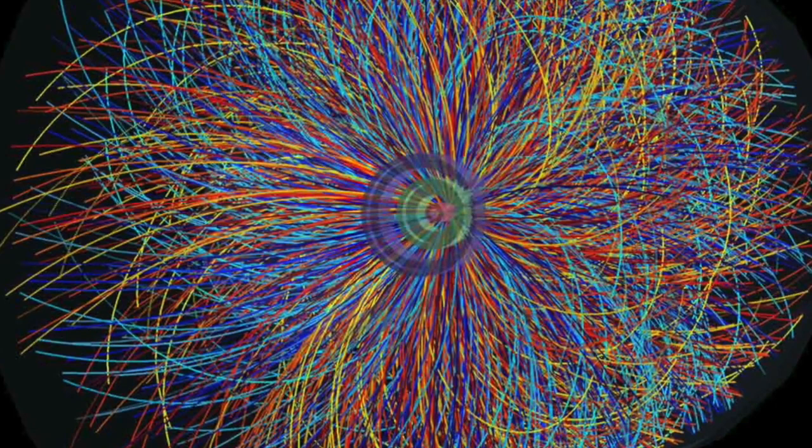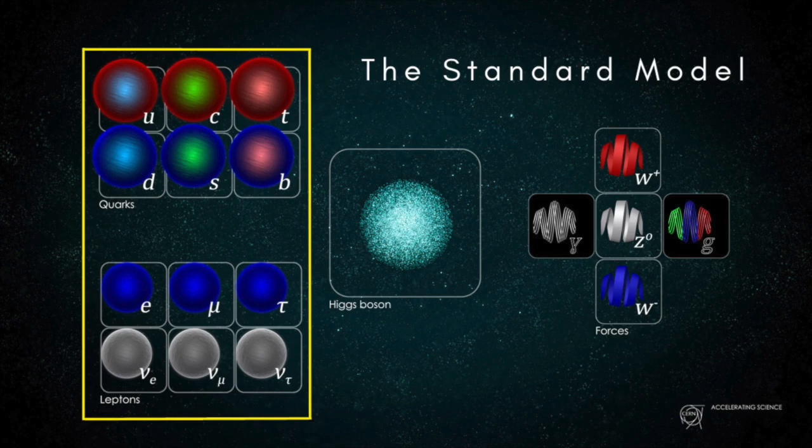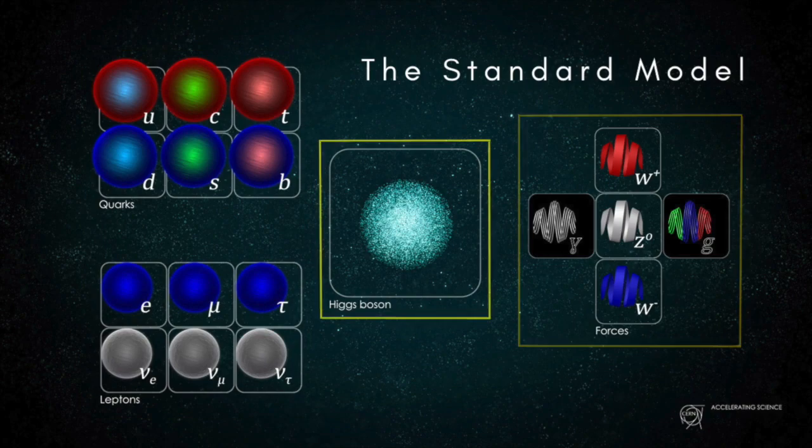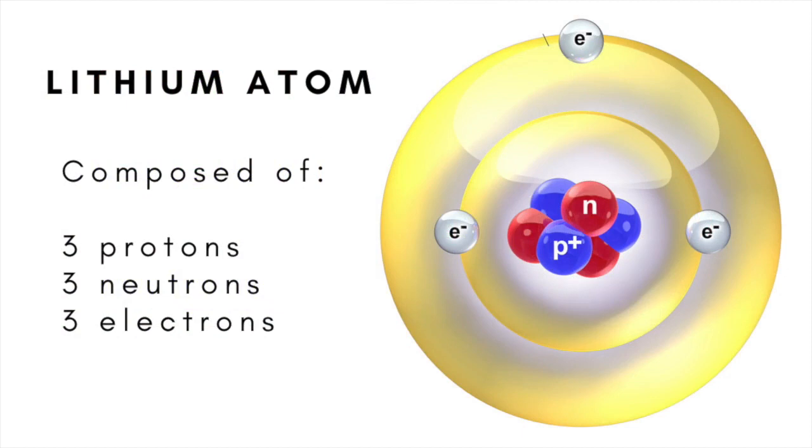Physicists have devised what they call the Standard Model to bring order to the world at the subatomic level. In this scheme there are 12 basic particles of matter, another 4 particles that act as force carriers, and an oddball called the Higgs boson which we'll get to in a minute.